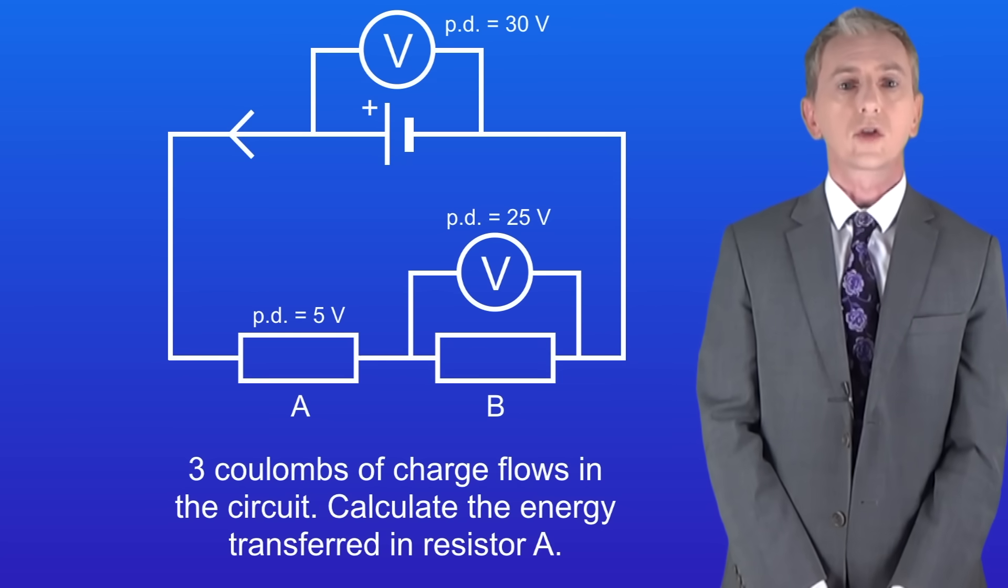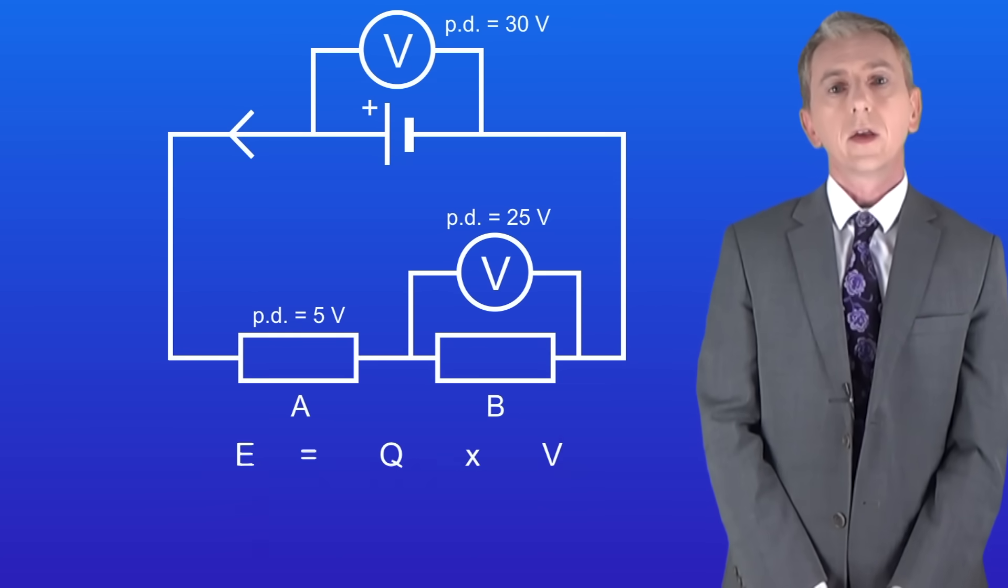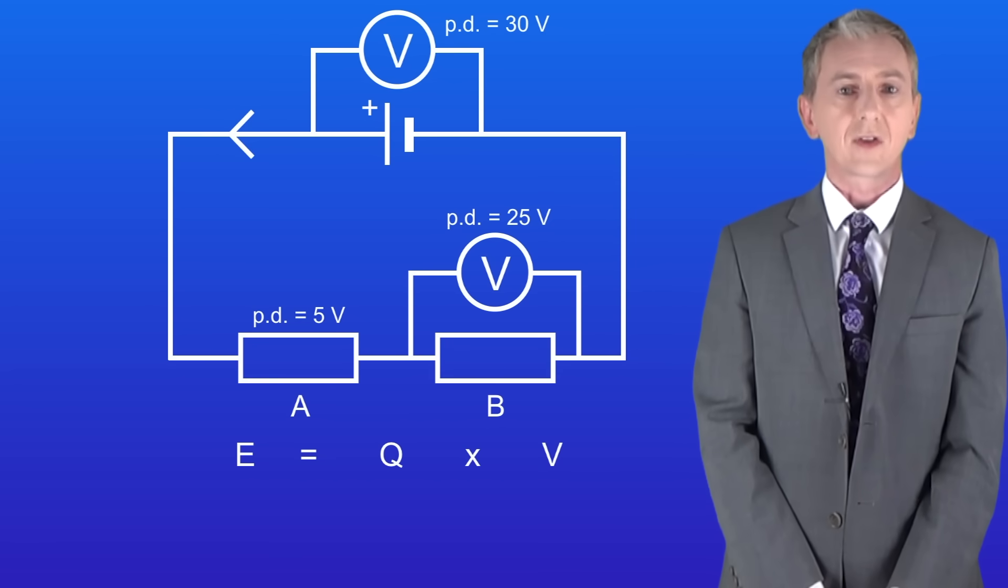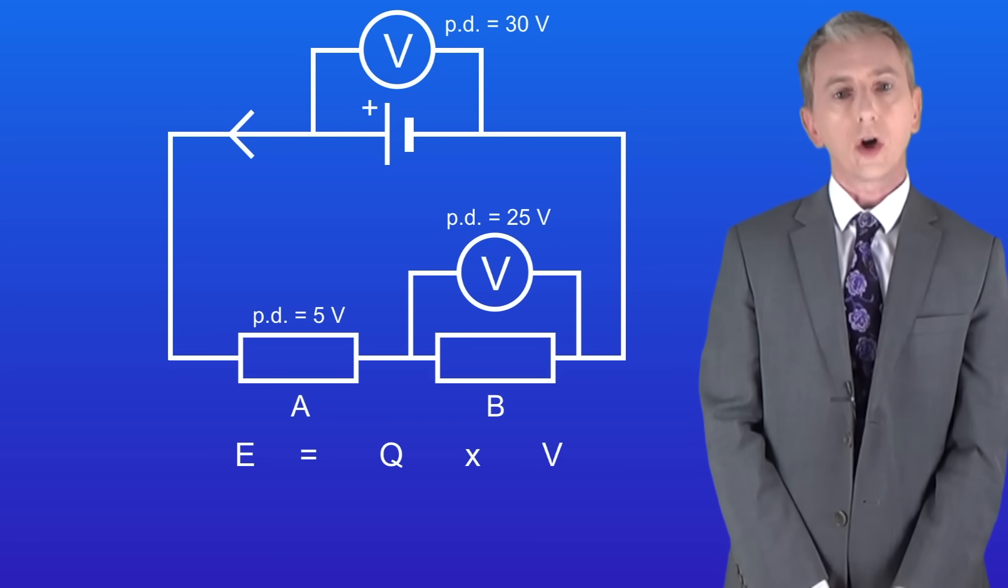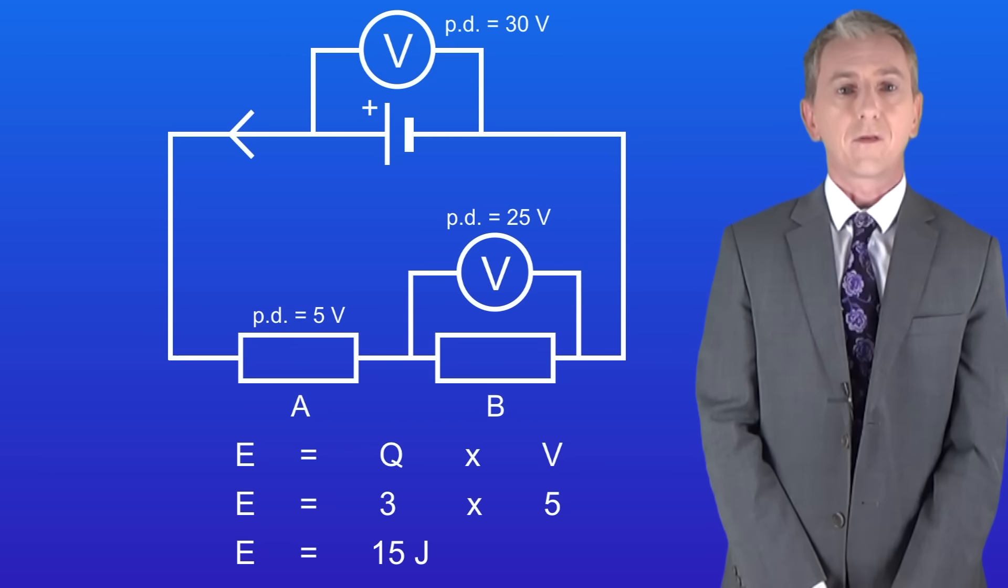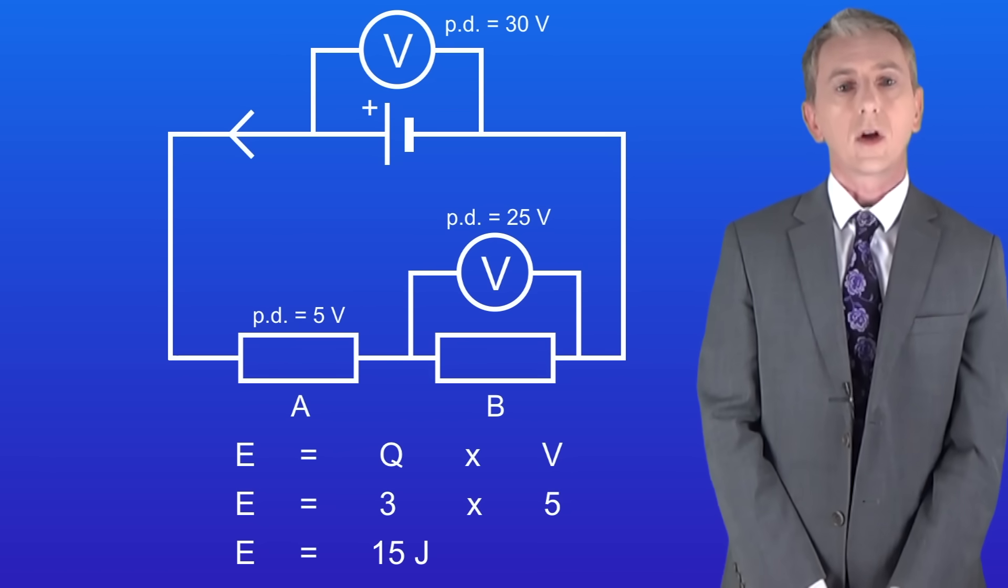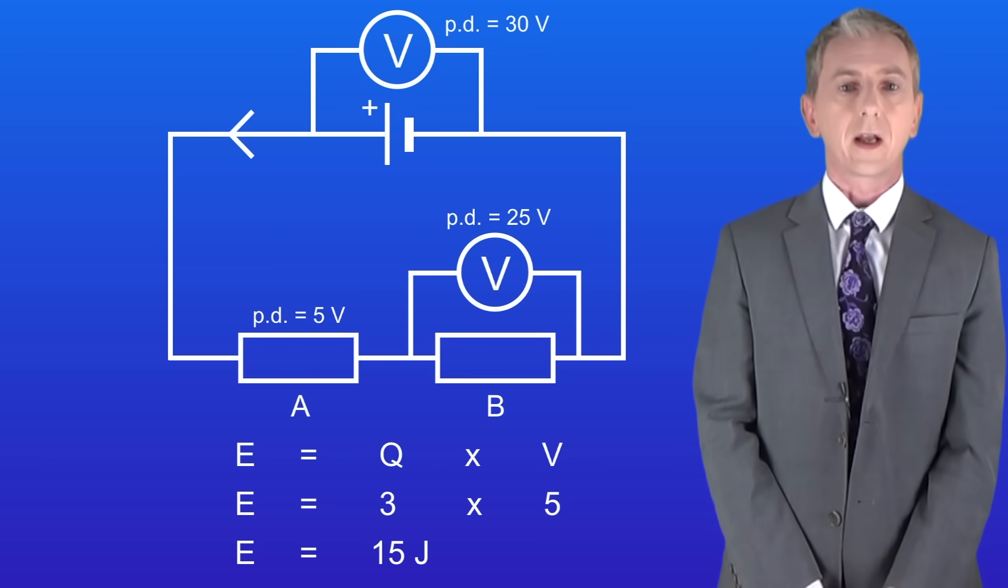We know that three coulombs of charge flows through the circuit. To calculate the energy transferred by resistor A we need to multiply the charge flow by the potential difference. Three multiplied by five gives us an energy transfer of 15 joules and that's our final answer.